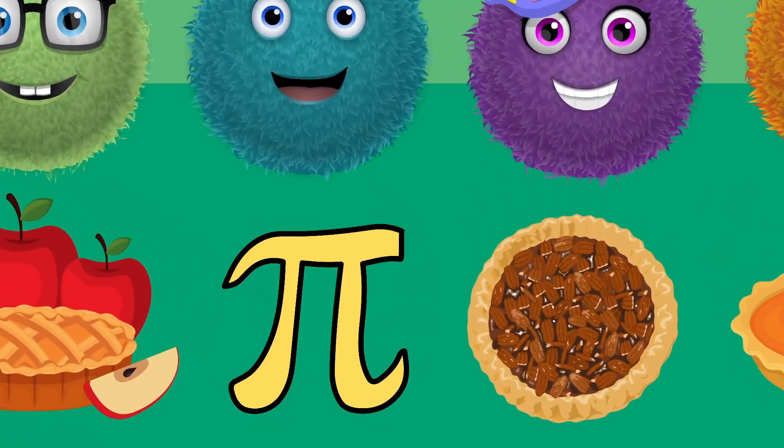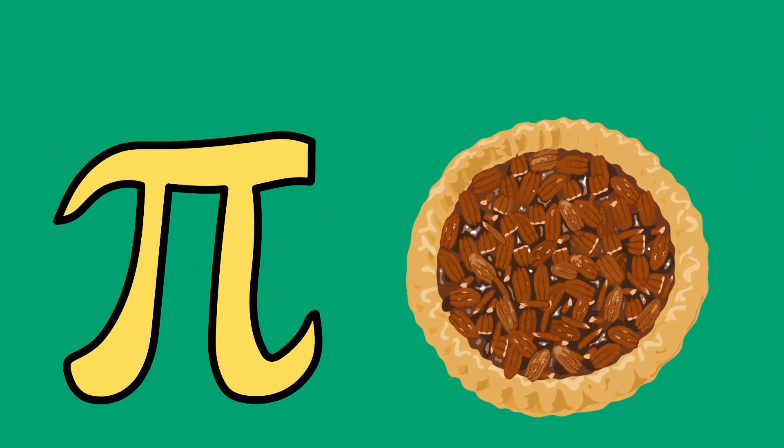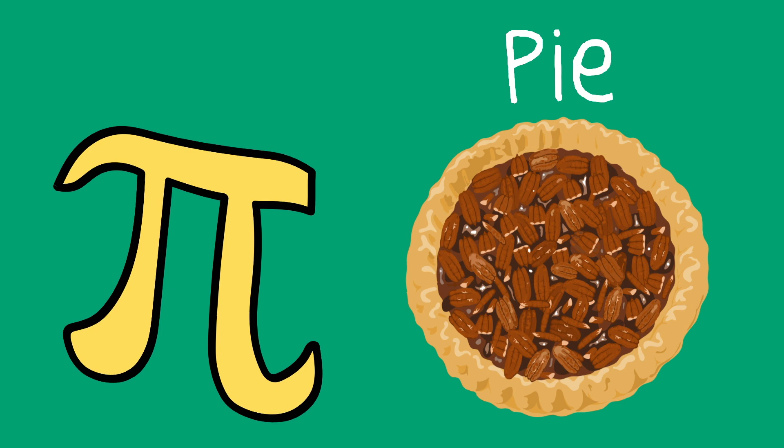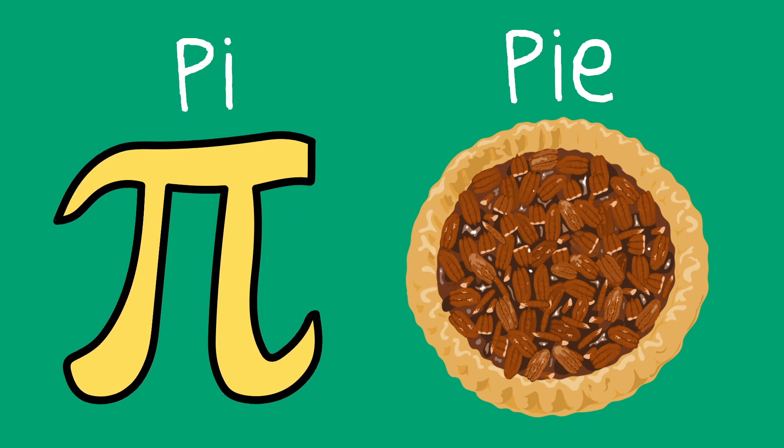Blue Fuzz brought this mysterious symbol to the party. Does this look like pie to you? Well, it might look different, but this symbol is actually also called pie. It's spelled differently, there's no E at the end, but it does sound the same. The thing is, you can't eat this pie.